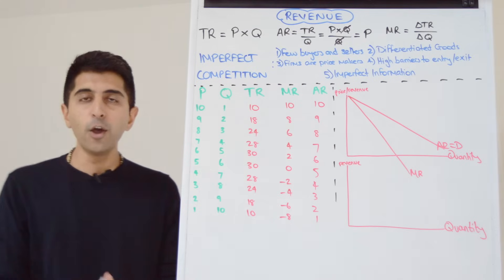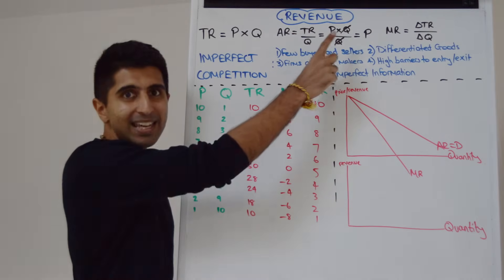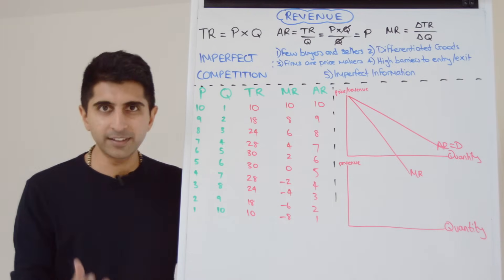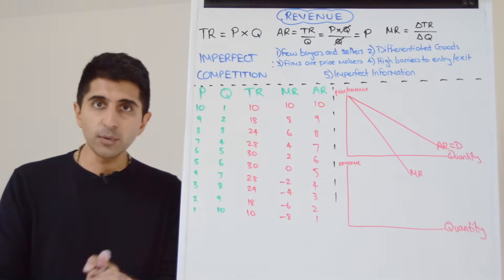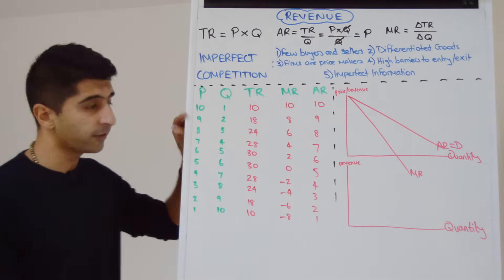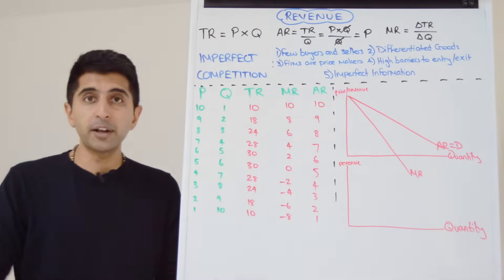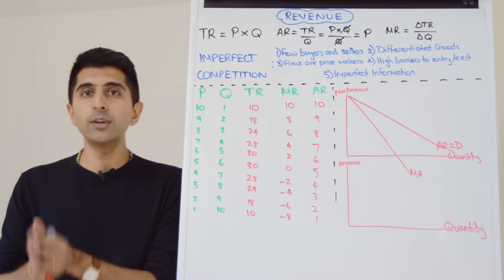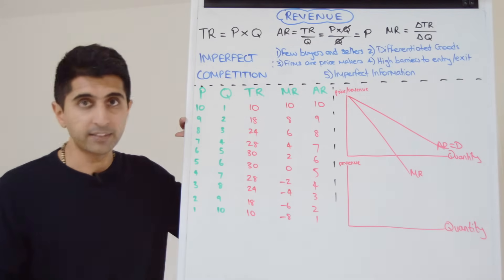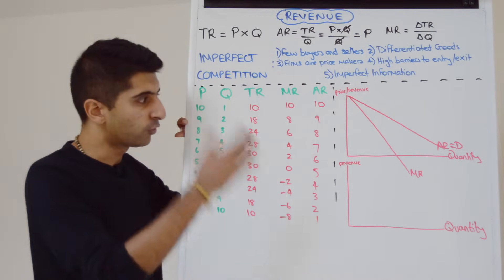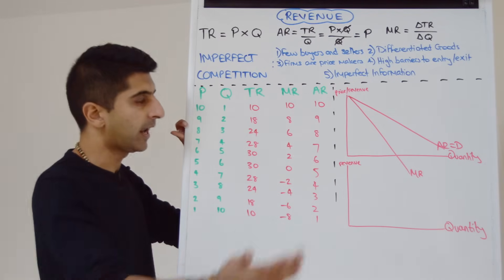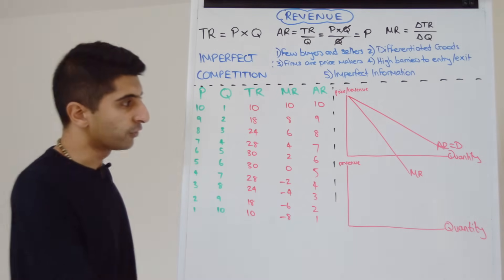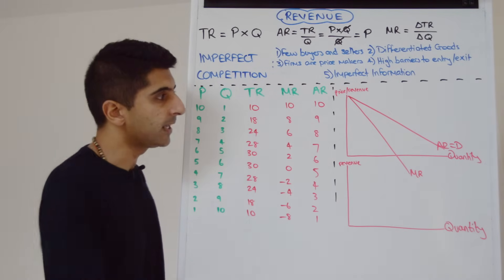There are two ways to understand that. One is with a mathematical proof — if you click on this link, I have done that proof in a different video. But intuitively, look at it this way: when a firm drops its price, it's not just dropping its price for the next unit sold — it's dropping its price on all the units that it's selling. Even the units sold beforehand are now being sold at a lower price. And that means that marginal revenue is going to drop twice as steep as average revenue. Just make sure you draw it roughly twice as steep as average revenue.